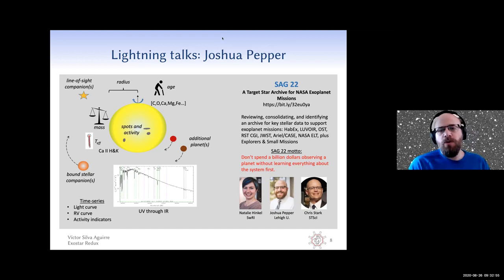We have formed a SAG, a science analysis group, as part of the NASA EXOPAD program. We are still welcoming new members, and we'd love to have additional people join us to define the parameters needed and to define the scope of the archive needed for this. I'm leading this project along with Chris Stark and Natalie Hinkle, and we'd love to have more participants.